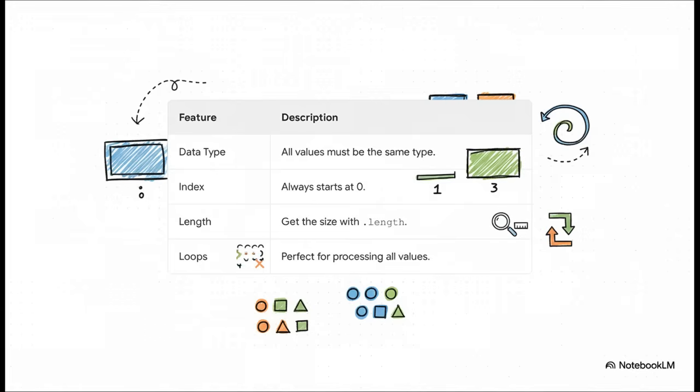Here is your official array cheat sheet. If you're going to remember anything, remember this: the data type has to be the same for everything inside; the index — the box number — always starts at zero; you can always find out the size using dot-length. And arrays and loops, they're best friends.